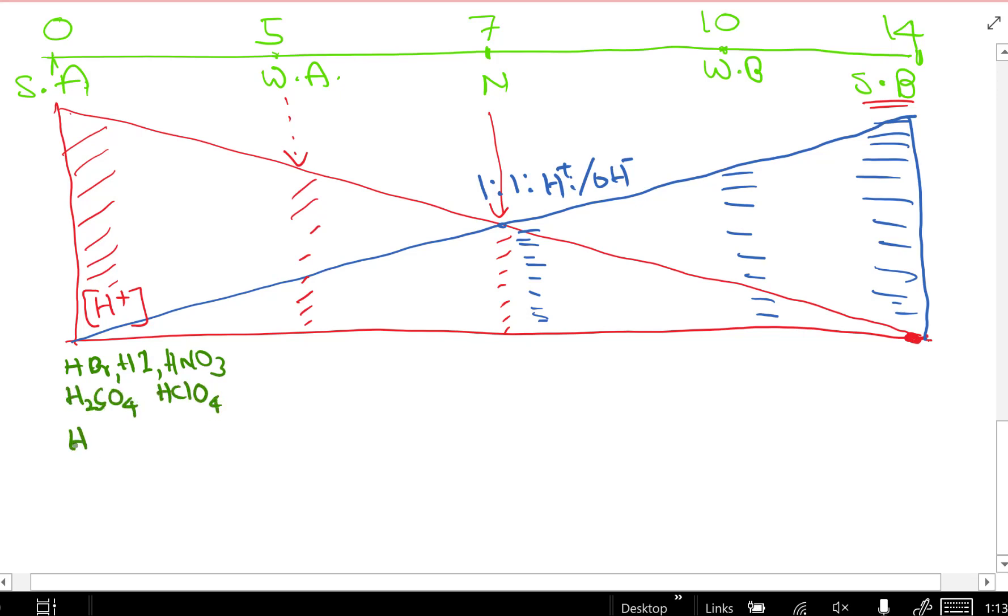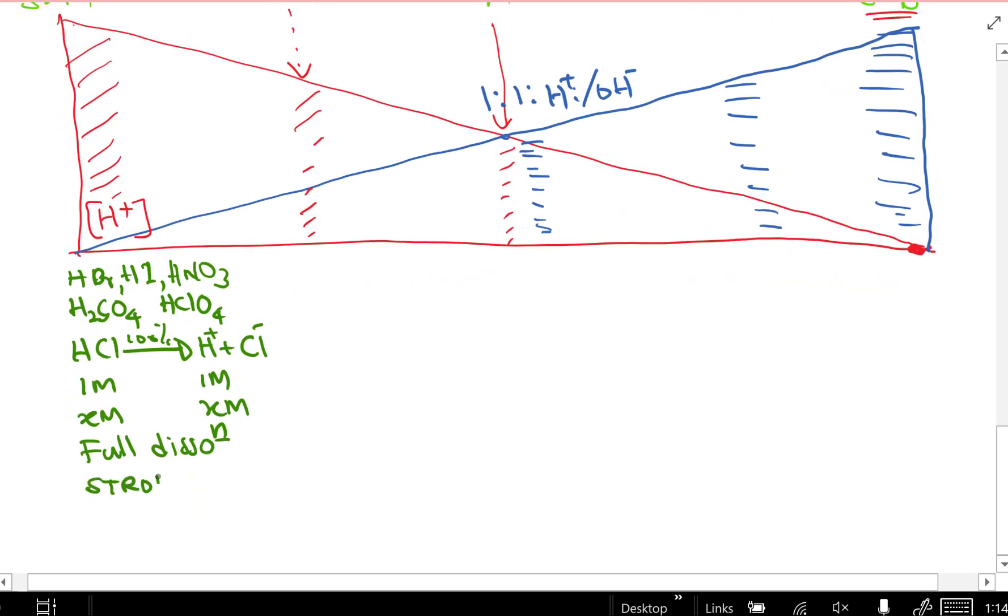Here, HBr, HI, HNO3, H2SO4, HClO4, those are the strong acids. HCl breaks down to H plus and Cl minus, 100%. So if you have one molar HCl, you will get one molar H plus. That's called full dissociation. That's why they're strong acids, they are strong electrolytes. No need to calculate Ka stuff, because it's 100% dissociation. Full dissociation, fully ionized. So not much math problems.